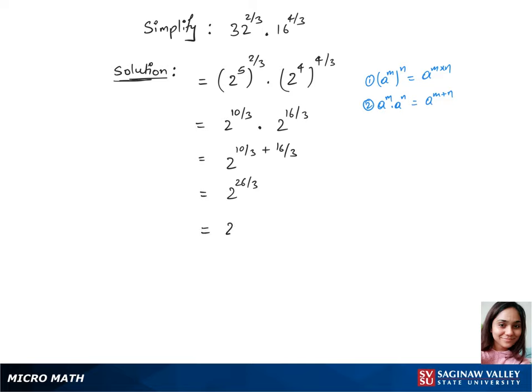We can also write the same step as 2 power 8 plus 2 over 3. And let's use rule 2 in the reverse way and write this as 2 power 8 times 2 power 2 over 3.